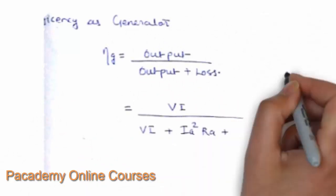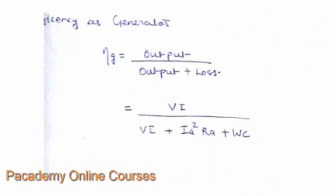The efficiency of the generator is written as output divided by (output plus losses), which equals V·I divided by (V·I plus IA squared·RA plus WC). This way, both the motor and generator efficiency can be found using the Swinburne's test.